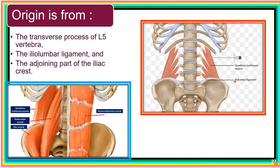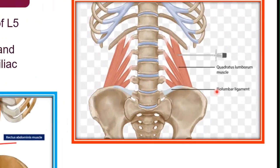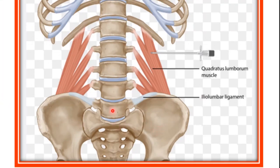The quadratus lumborum muscle picks origin from the L5 vertebra, from the iliolumbar ligament — the ligament connecting the ilium and the lumbar vertebra — and finally from the adjoining part of the iliac crest. So the origin comes from the L5 vertebra, the iliolumbar ligament, and the adjoining part of the iliac crest.